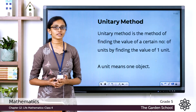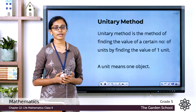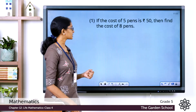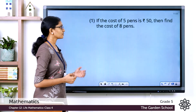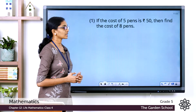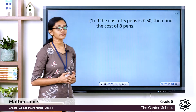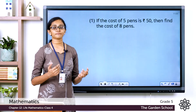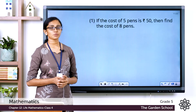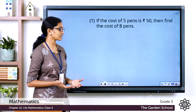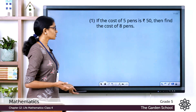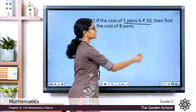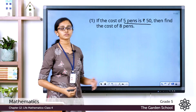Let's get to know the method using some examples. If the cost of 5 pens is rupees 50, then find the cost of 8 pens. The cost of 5 pens is given and that is equal to rupees 50.